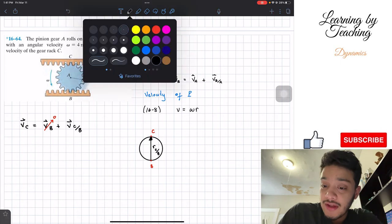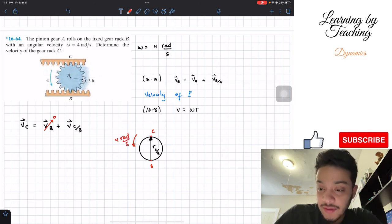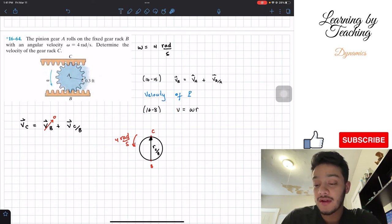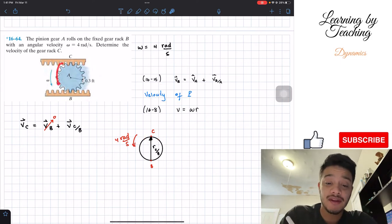If we know that this pinion is moving at an angular velocity of 4 radians per second, we can utilize equation 16.a, where we know that the velocity of a point, in this case point C, when we know the angular velocity of a disk, in this case a pinion gear.